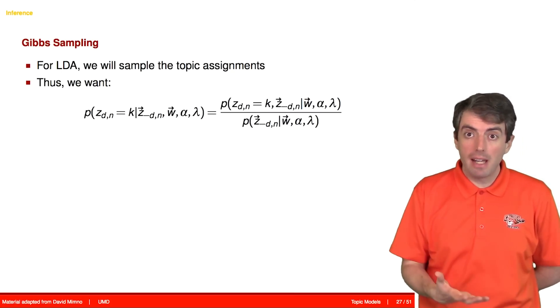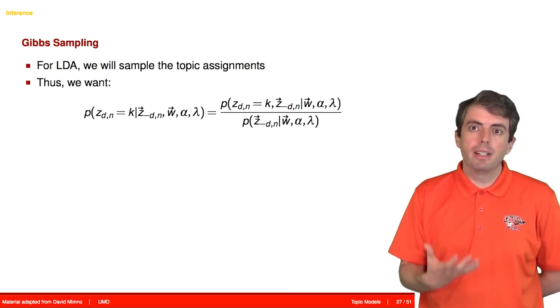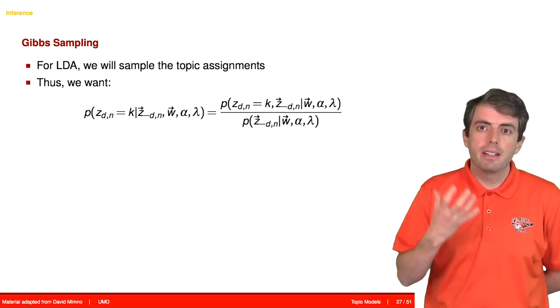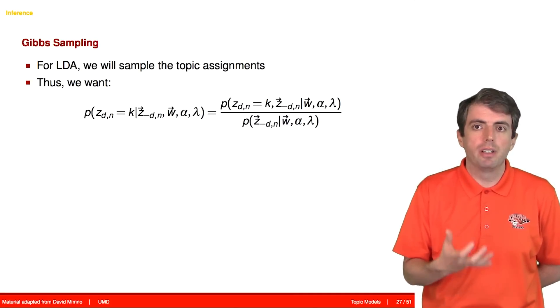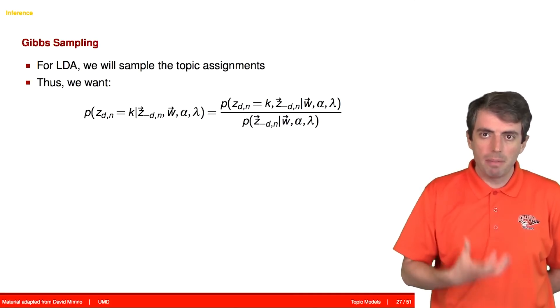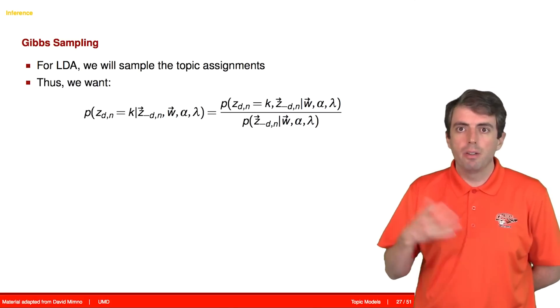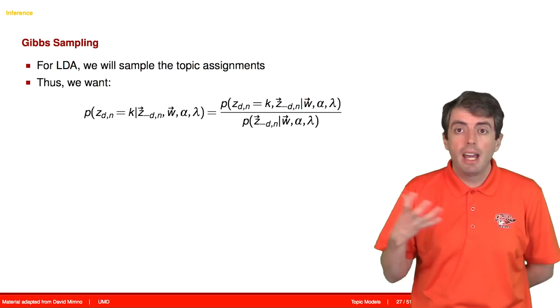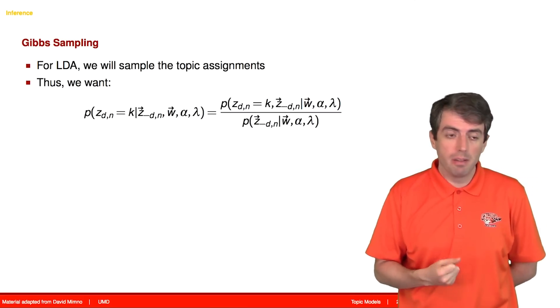If we write this out mathematically, basically what we're doing is we're going to find the conditional probability distribution of a single word's topic assignment conditioned on the rest of the model. All of the other words' topic assignments and all of the other latent variables in the model.